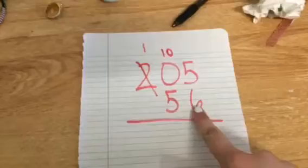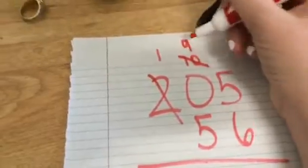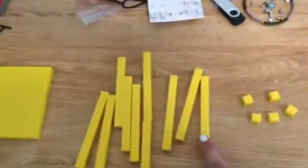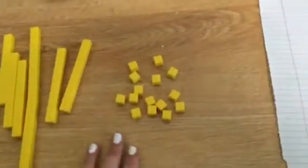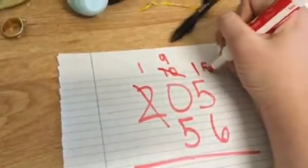But we still don't have enough to take 6 from 5. So I'm going to take one away from 10, and that becomes a 9. So we're going to take one of these away and replace it with 10 ones. Now when we add these together, we have 15 little ones because 10 plus 5 is 15. So I'm going to put 15 up here.